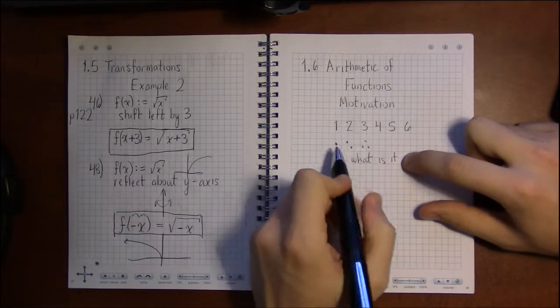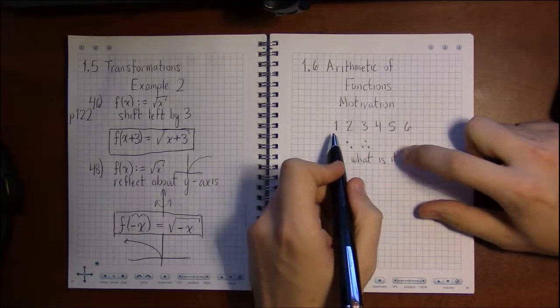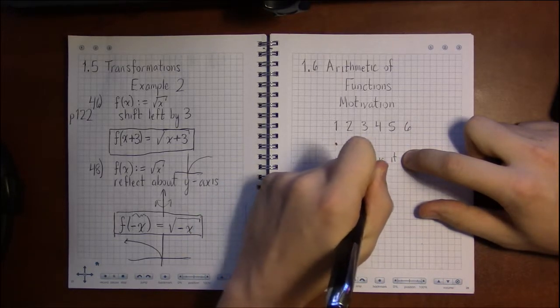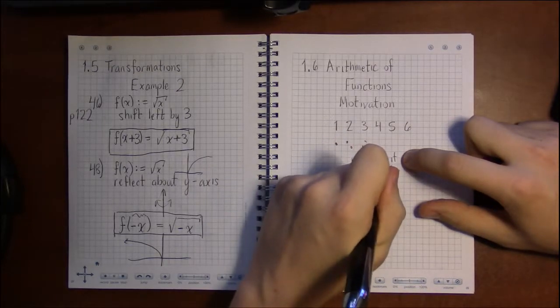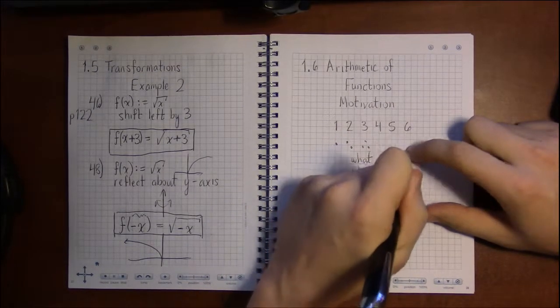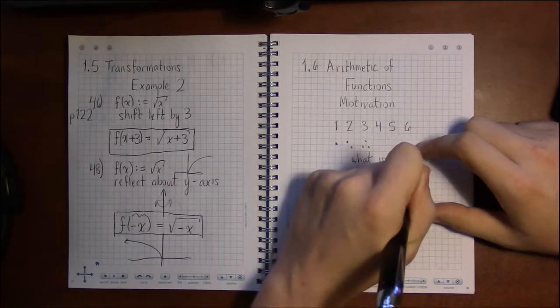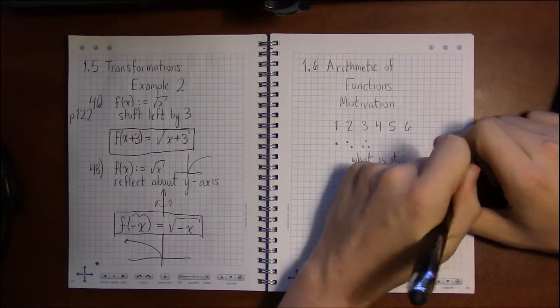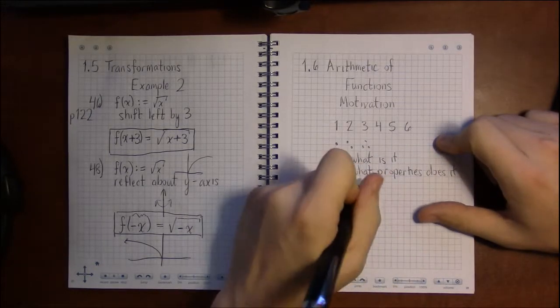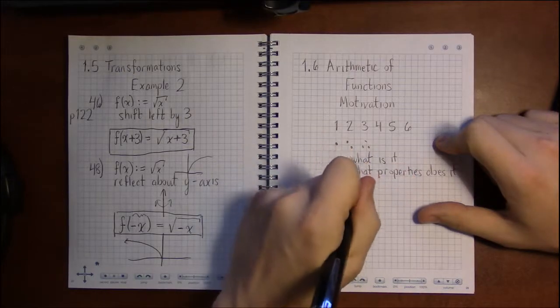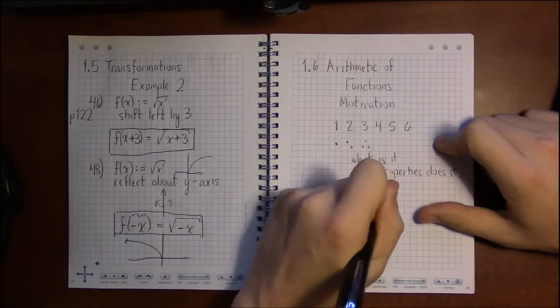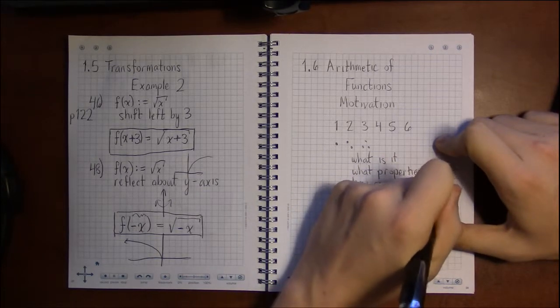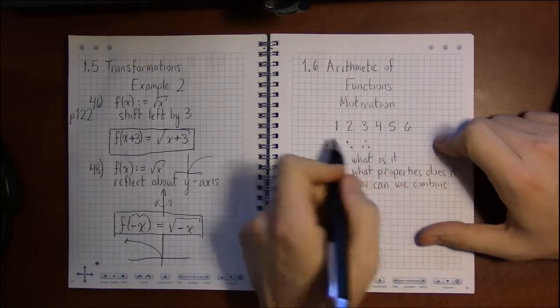So you can kind of summarize these three states as saying: what is it? What properties does it have? And then finally, how can we combine these things? And we call the combination of numbers just arithmetic.